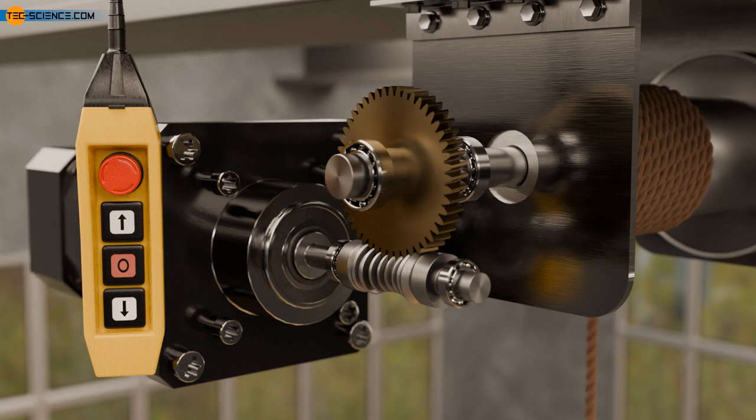Self-locking can become a problem when large masses are moved by the worm gear. If the worm drive is suddenly switched off, the worm gear will continue to move a little due to the inertia of the driven mass. However, with self-locking, the worm will not allow any rotation, resulting in enormous forces acting on the flanks, which can lead to worm breakage.